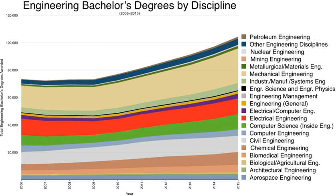In Hong Kong, engineering degree programs — four-year bachelor's degrees — are offered by public universities funded by the University Grants Committee (UGC). There are 94 UGC-funded programs in engineering and technology offered by City University of Hong Kong, the Chinese University of Hong Kong, the Hong Kong Polytechnic University, the Hong Kong University of Science and Technology, and the University of Hong Kong.